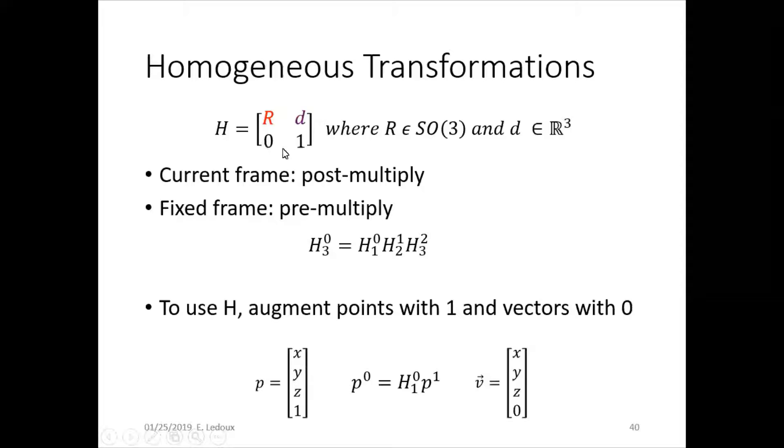So this is written as R, D, 0, 1, kind of shorthand, where this zero is actually three zeros. And R is in special orthogonal group three, D is in R cubed. So basically, they are both in three-dimensional space. We use x, y, and z.